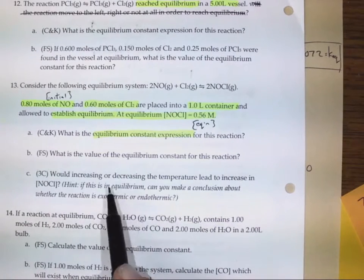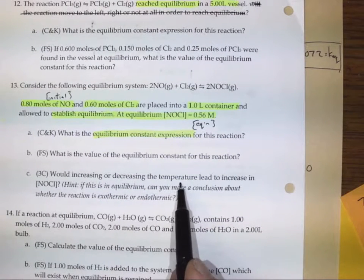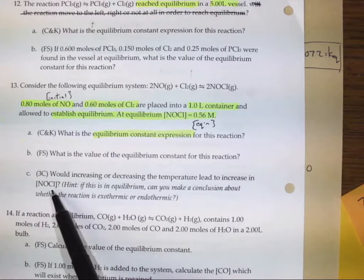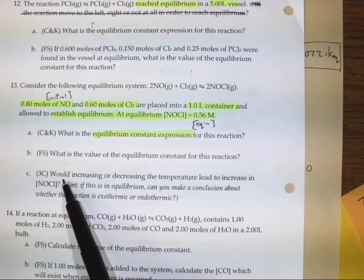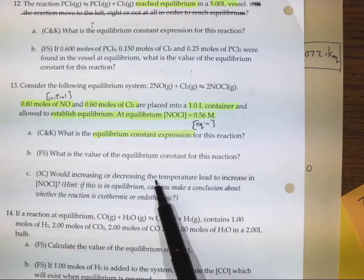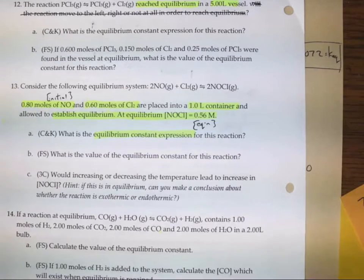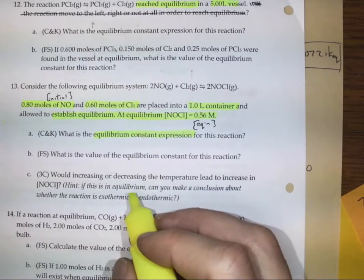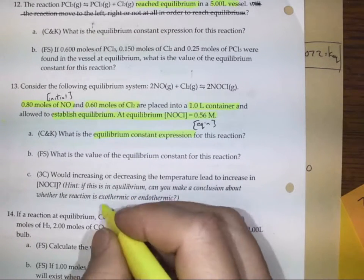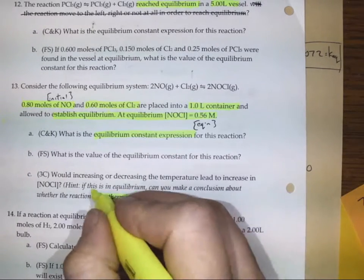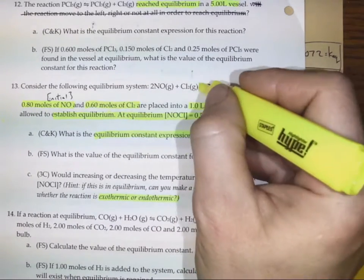Last question: would increasing or decreasing the temperature lead to an increase in NOCl? We're given a hint — if this is an equilibrium, can you make a conclusion about whether the reaction is exothermic or endothermic? So that's a big hint here. We know it's in equilibrium.